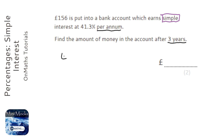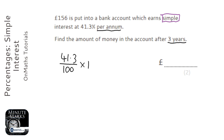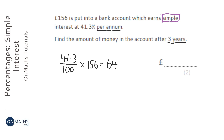Percent just means per hundred, so on my calculator I'm going to do 41.3 divided by 100 and then times it by 156. That's how to work out 41.3% of 156 — so 41.3 divided by 100 times by 156. When I do that I get 64.428.